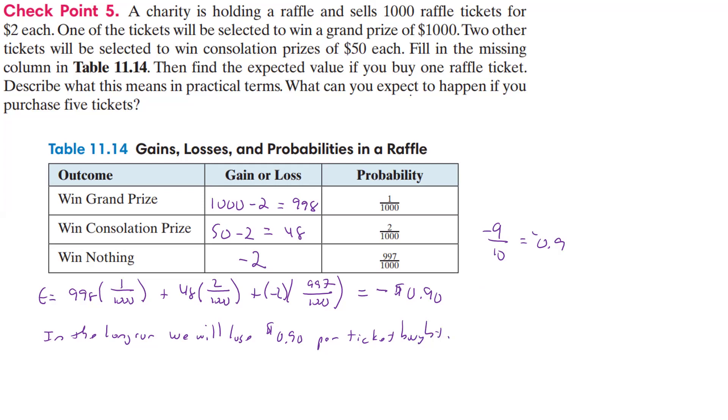Now, it says what happens if you purchase five tickets? Well, our probability will be five times higher because you're going to buy five more tickets, but guess what? We will still lose 90 cents per ticket on average in the long run.